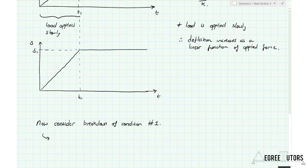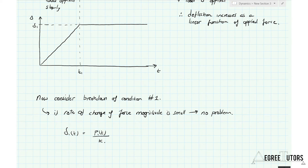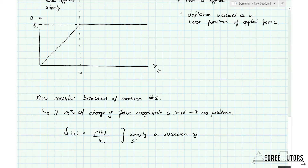If the rate of change of force magnitude is small, we don't have a problem. We would simply have a succession of static analyses. Any deflection δ1 equals whatever force magnitude corresponded at the same time divided by the stiffness: δ = P/k. So if force magnitude is changing but the rate of that change is small, all we have is a succession of static analyses — we don't actually have a dynamic problem in the classic sense.